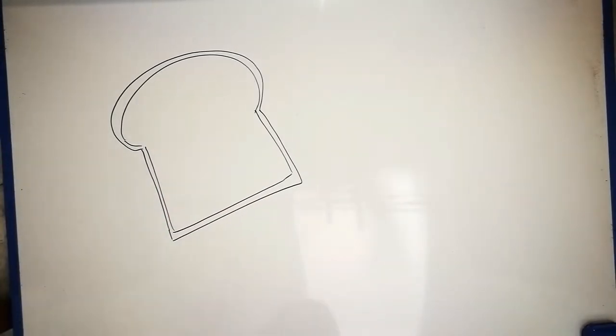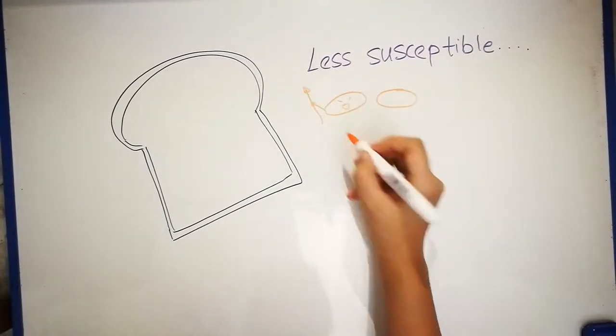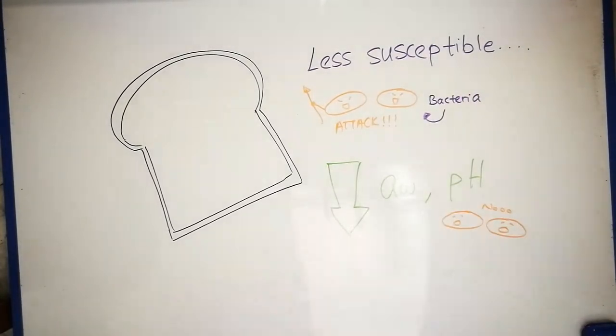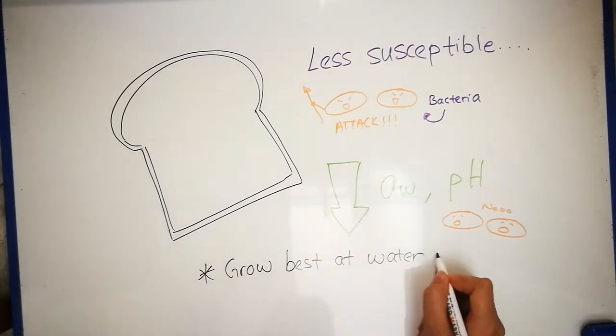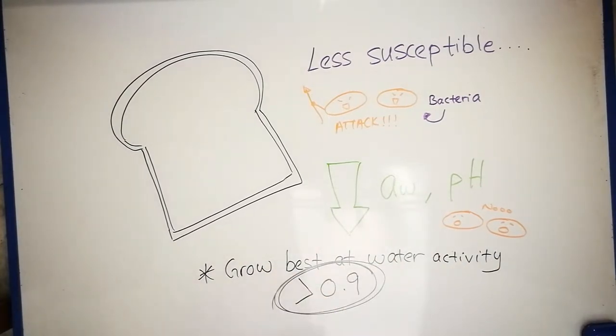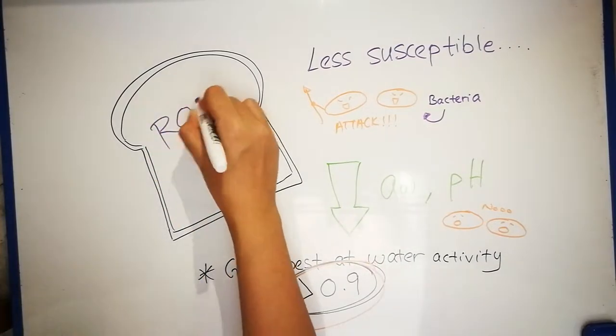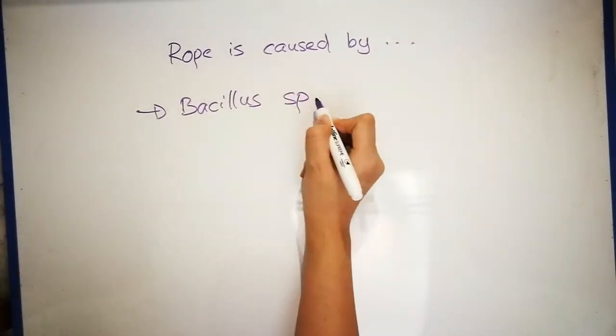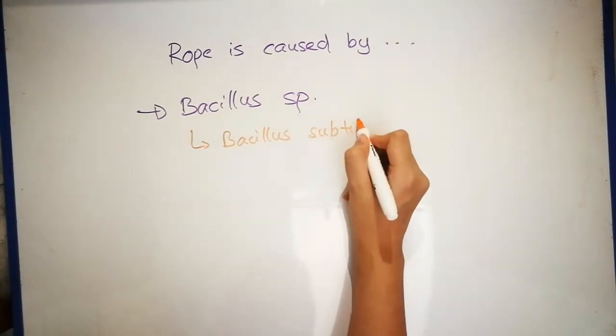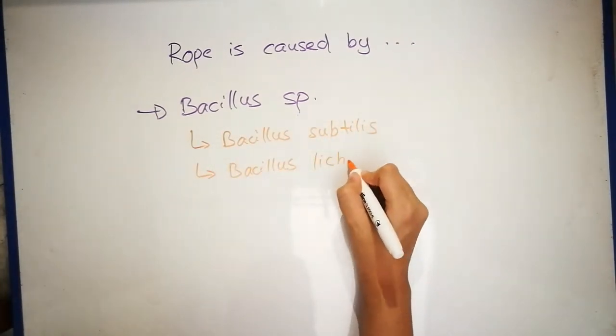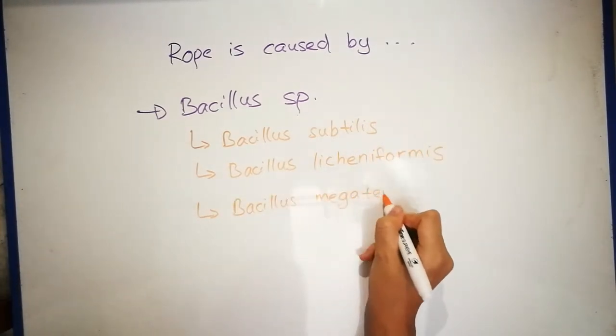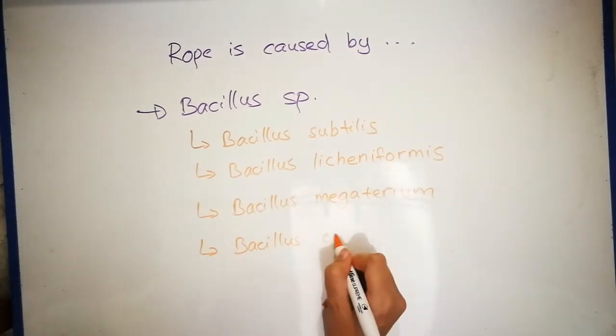Bakery products are less susceptible to bacteria attack due to the low water activity and low pH present in the baked goods. Bacteria generally grow best if the water activity is above 0.9. The spoilage on bakery products is also known as rope spoilage. Rope is commonly caused by Bacillus species, which include Bacillus subtilis, Bacillus licheniformis, Bacillus megaterium, and Bacillus cereus.